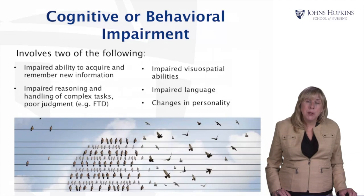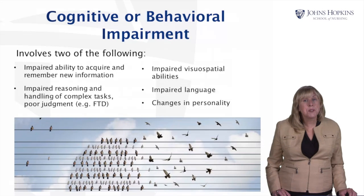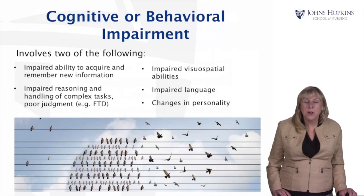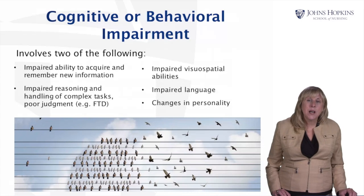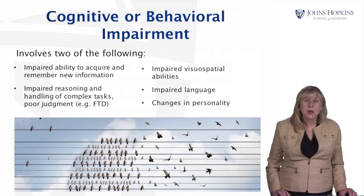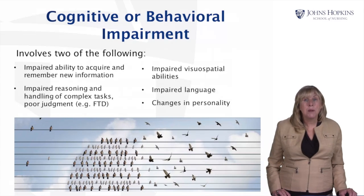Impaired visuospatial abilities and sometimes hallucinations are symptoms that may be more common in individuals with Lewy body disease. Impaired language, or impaired ability to find words, is a classic and often early symptom in individuals with Alzheimer's disease. Changes in personality are another symptom, and apathy in particular is a symptom more common in individuals with Lewy body disease.